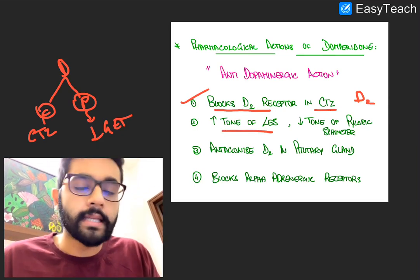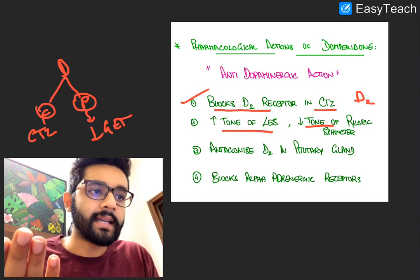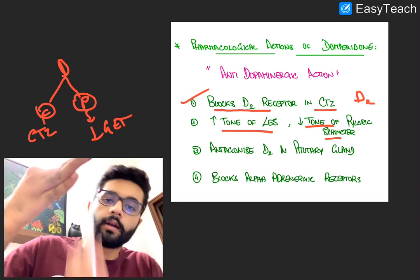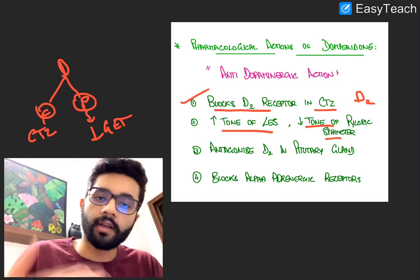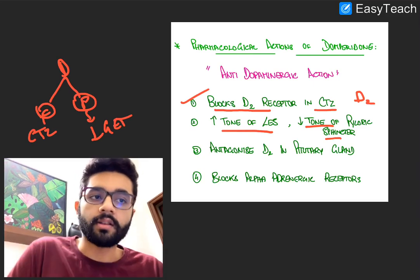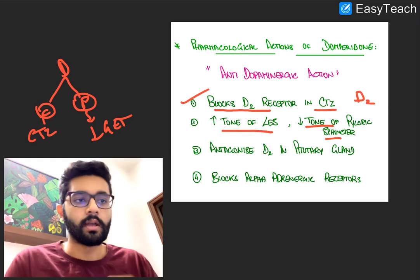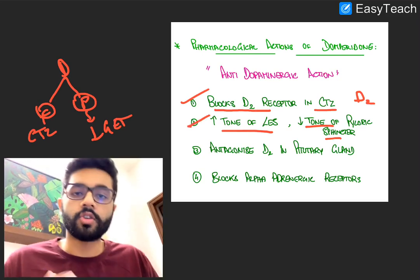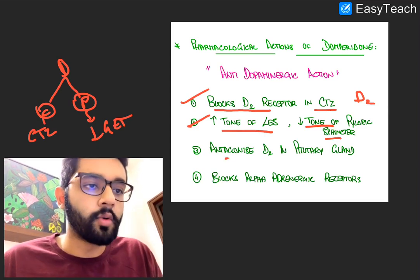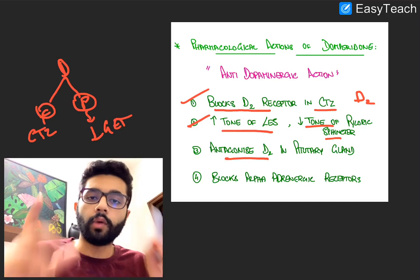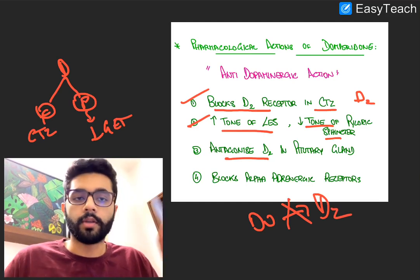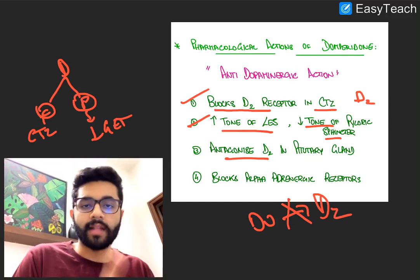Peripherally, domperidone increases the tone of the lower esophageal sphincter and decreases the tone of the pyloric sphincter. When the lower esophageal sphincter tone increases, food cannot move up from the stomach to the esophagus, preventing vomiting. Food also moves out of the stomach faster because the pyloric sphincter tone reduces. Additionally, domperidone antagonizes D2 at the pituitary gland — it blocks D2 receptors there, which is important and we'll return to why shortly.